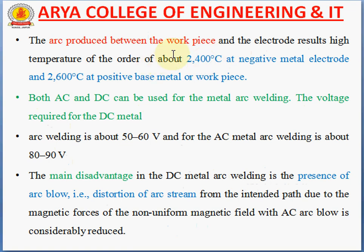The arc produced between the work piece and electrode results in a high temperature — about 2400 degrees Celsius at the negative metal electrode and 2600 degrees Celsius at the positive base metal or work piece. Both AC and DC can be used for metal arc welding. The voltage required for DC metal arc welding is generally about 50 to 60 volts, and for AC metal arc welding it is 80 to 90 volts. The main disadvantage of DC metal arc welding is the presence of arc blow — the distortion of the arc stream from its intended path due to magnetic forces of a non-uniform magnetic field. With AC, arc blow is considerably reduced.